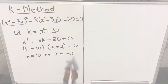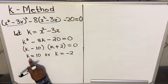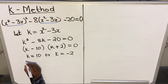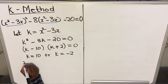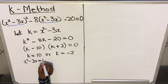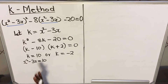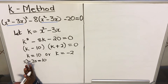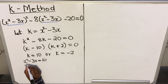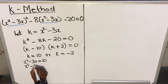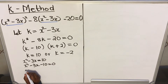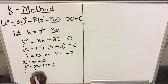When you get here, you put back what k stands for. K stands for x squared minus 3x. So for k equals 10, you write x squared minus 3x equals 10. I suggest you finish one side then move to the other. So you get x squared minus 3x minus 10 equals 0, then you factorize.